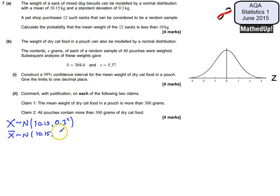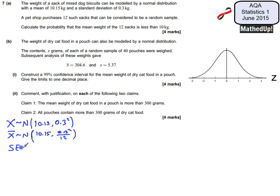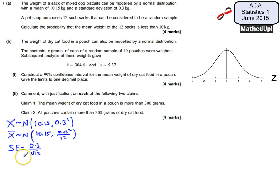The variance of X-bar is 0.3 squared divided by n, where n is 12. I can also write down the standard error, which is equal to the standard deviation divided by the square root of n — that's 0.3 divided by root 12. So now I know my standard error.